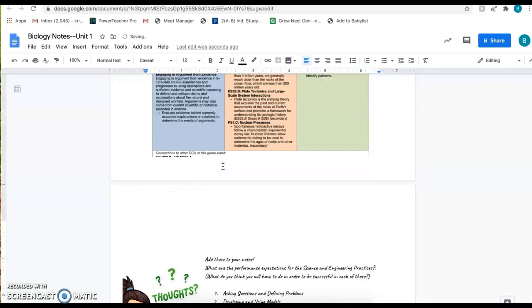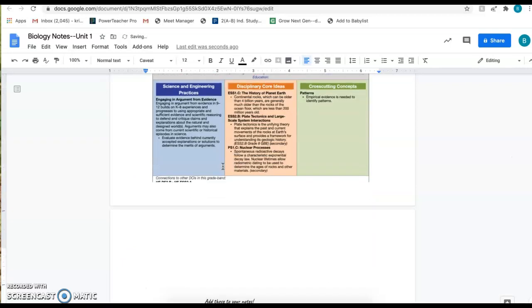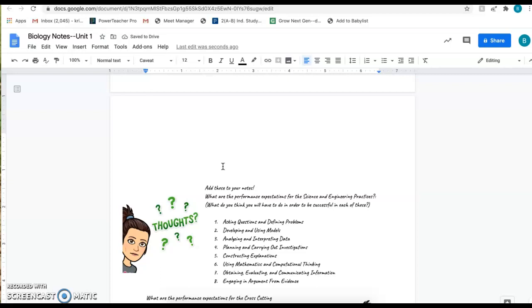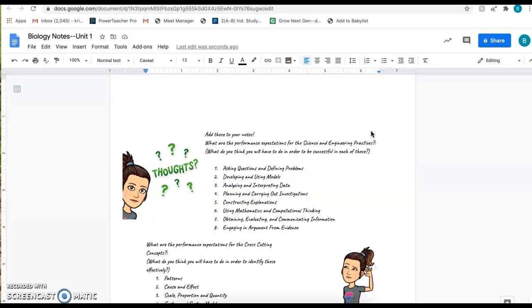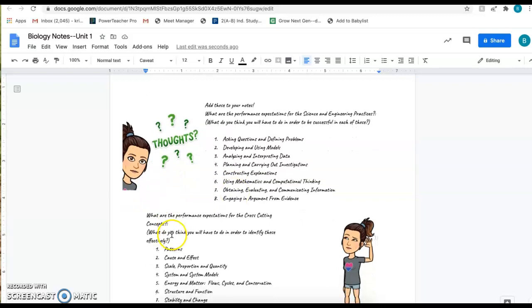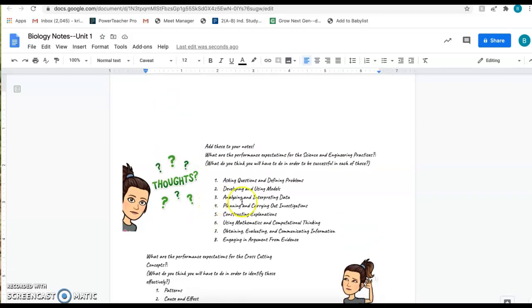I want you to add these to your notes. There are some performance expectations that go along with both the science and engineering practices and cross-cutting concepts. I want you to write these all down in your notes. These are the eight science and engineering practices, and then these are the seven cross-cutting concepts. What I want you to do for me is to write down these eight, and then write down what you think you'll have to do in order to be successful in doing each of these. So the first one, asking questions and defining problems, that one's probably the most simple.